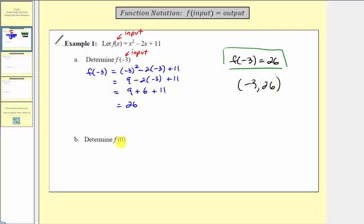For part b, we want to determine f(0), so notice now the input is zero, so we substitute zero for x to determine the output, or function value. f(0) is going to be equal to zero squared minus two times zero plus 11.